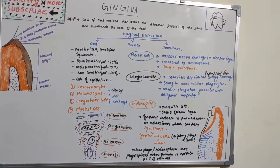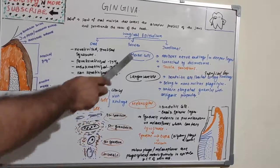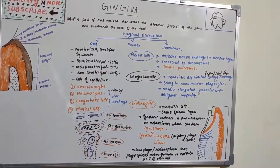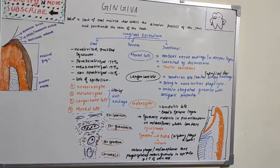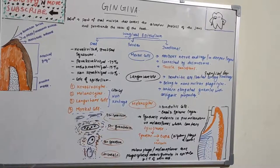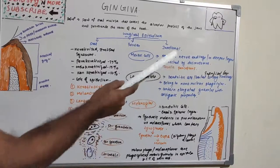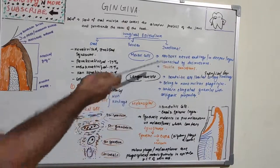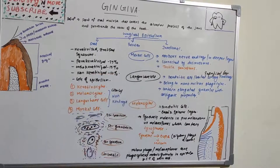Merkel cells are located in the deeper layer of the epithelium and they harbor nerve endings. They are connected to adjacent cells by desmosomes and have been identified as tactile receptors.